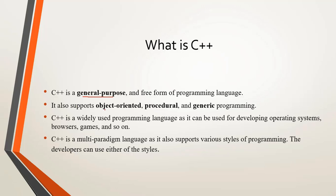C++ also supports object oriented programming, which means it supports OOP concepts like encapsulation, abstraction, inheritance, and so on — we will cover these in upcoming videos. Second, it is a procedural language, meaning the program is broken down into small modules. Third, it supports generic programming, meaning a particular code is given a common behavior not dependent on any type, so it can be used in various situations.